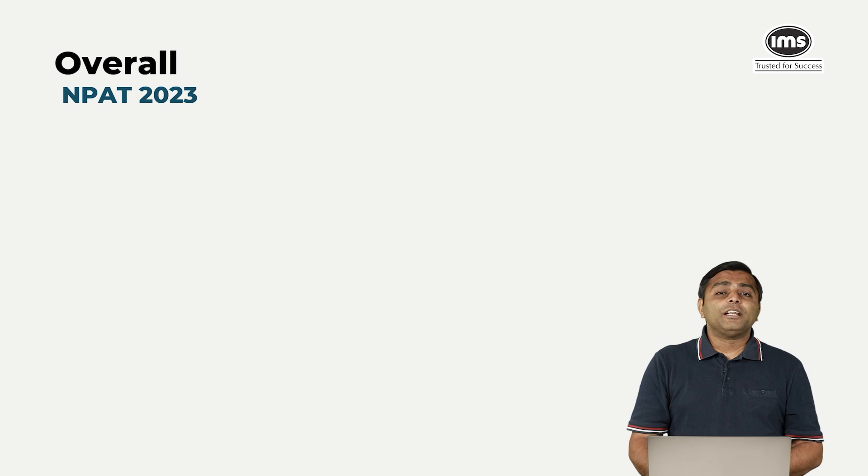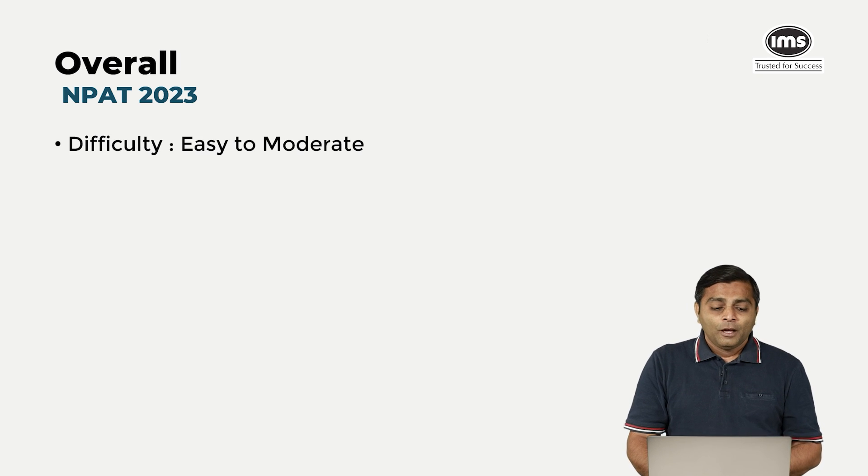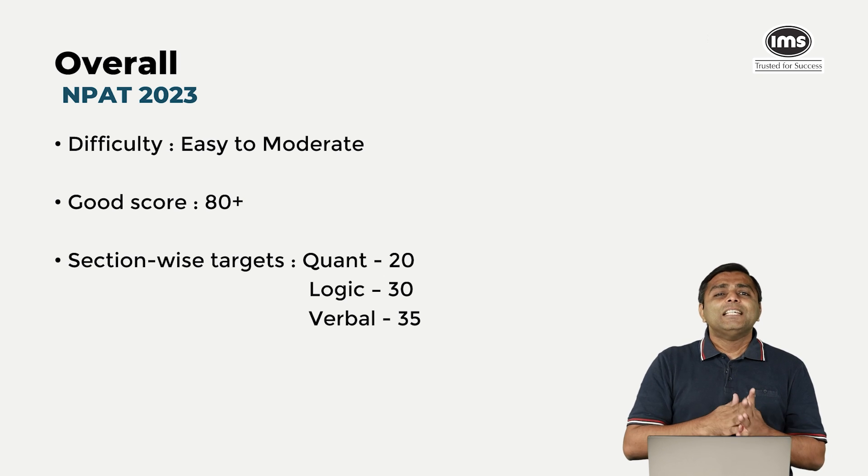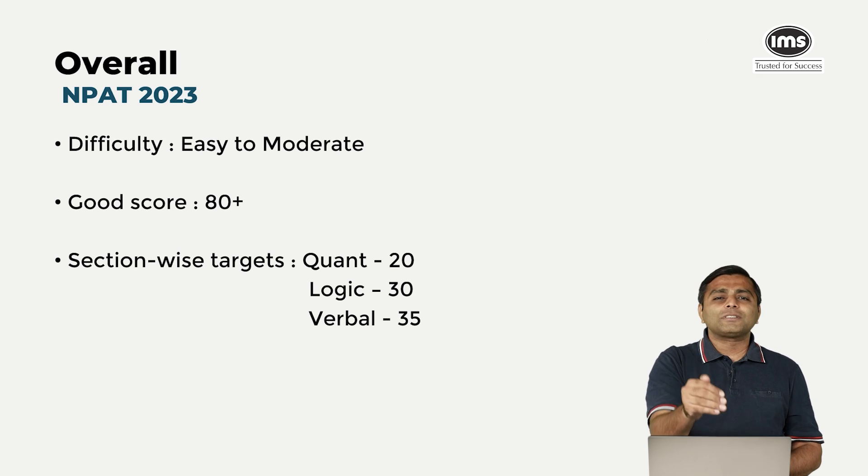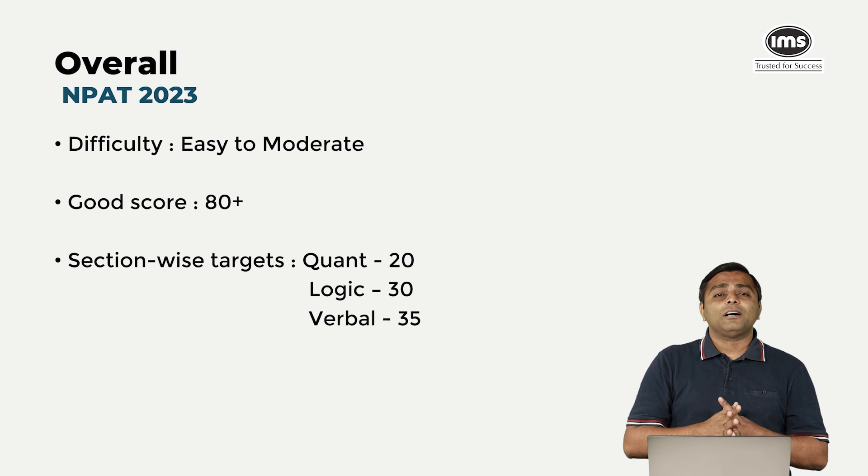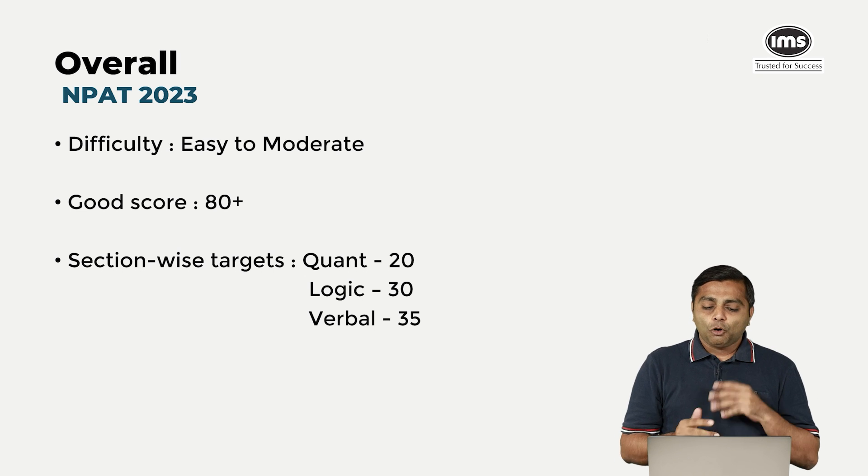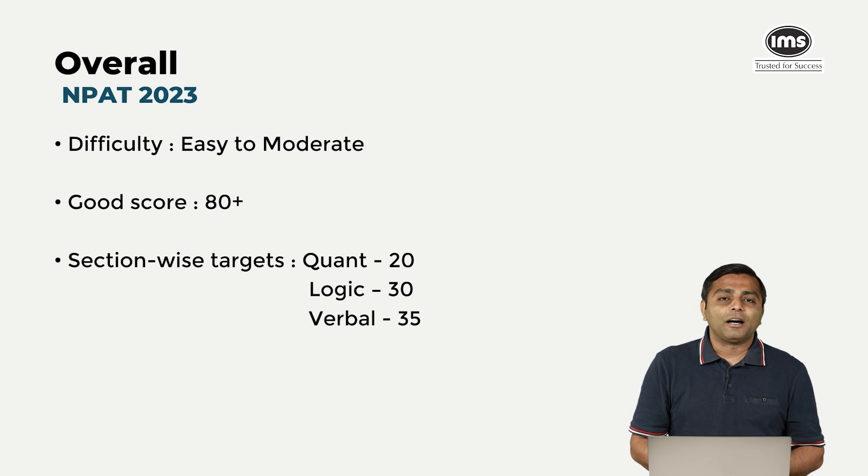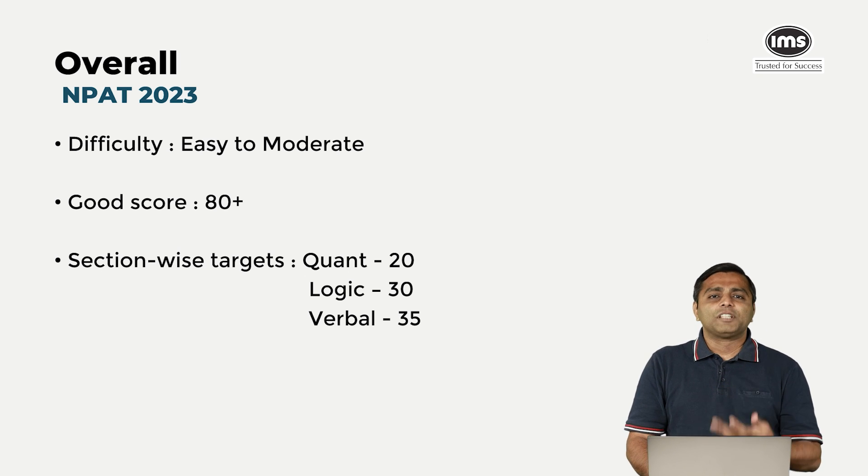So overall, we thought NPAT 23 was easy to moderate, not difficult at all. In excess of 80 would be a safe score for you to be able to land any one of the top 3 to 4 courses available at NMIMS. Section-wise, I think these should be your targets to be able to cross that 80 to 85 barrier. We're taking very conservative estimates here: quant 20, logic 30, verbal 35. This should help you reach that 85 mark, or if you go one or two questions further wrong, 82 to 83 should also be good enough for you to be able to breach that 80 mark. It's our best estimate that if you cross an 80 to 85 in an actual NPAT, more or less you are safe with respect to your admissions.